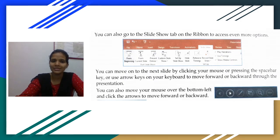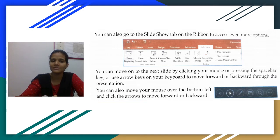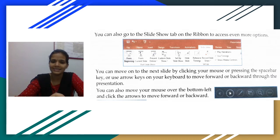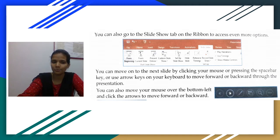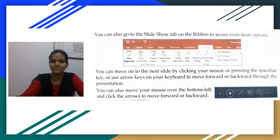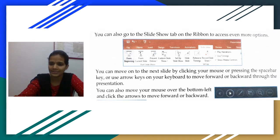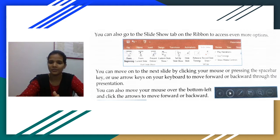You can also go to the Slide Show tab on the ribbon to access more options. You can move to the next slide by clicking your mouse, pressing the spacebar key, or using the arrow keys on the keyboard. You can also use the forward and backward keys, or move your mouse over the bottom left and click the arrows to move forward and backward. There are many ways to show your presentation.